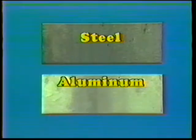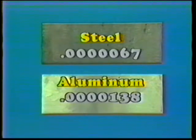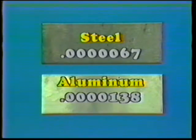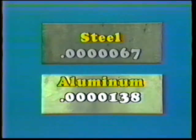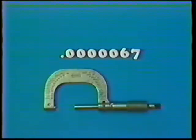Each type of metal, such as steel, aluminum, and so forth, has its own coefficient of expansion. An average value is generally used. For aluminum, the coefficient of thermal expansion is about twice that of steel. With all of those zeros, the amount of expansion doesn't seem to amount to much — it couldn't be measured with a micrometer, which is accurate up to about the fourth decimal place.